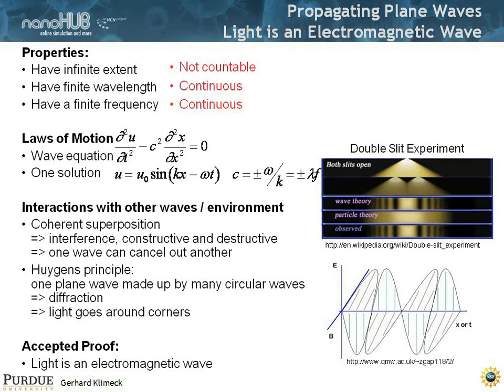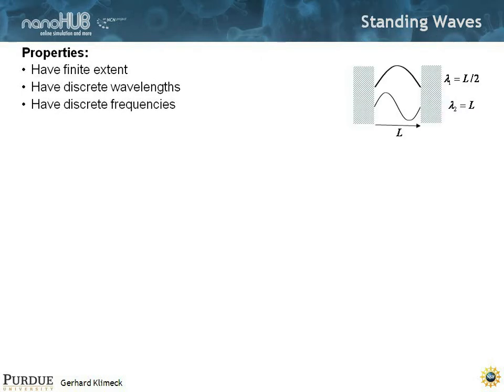Again, it's important to realize that they are not countable. They have an infinite extent. They have a finite wavelength, meaning they are continuous. And you can give it any frequency, but it's continuous. They have a finite frequency, it's also continuous. There's nothing that prevents you to go from 1.1 megahertz to 1.112 megahertz. It's completely continuous. You pick a number, you can choose it.